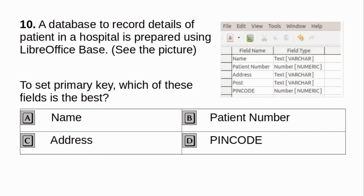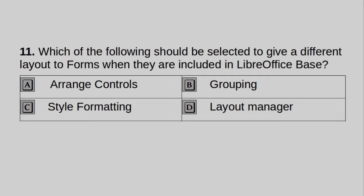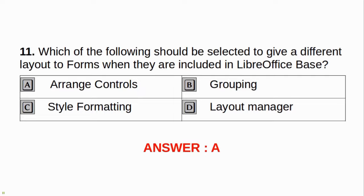A database to record details of patients in a hospital is prepared using LibreOffice Base. To set primary key, which of the fields is the best? A. Name. B. Patient number. C. Address. D. Pincode. Answer: B. Patient number. Which of the following should be selected to give a different layout to forms when they are included in LibreOffice Base? A. Arrange controls. B. Grouping. C. Style formatting. D. Layout manager. Answer: A. Arrange controls.